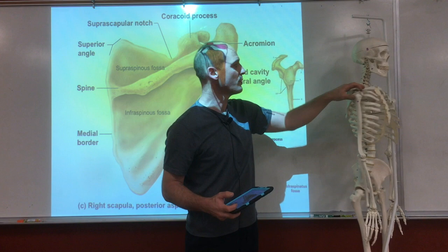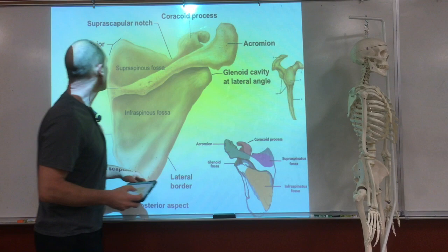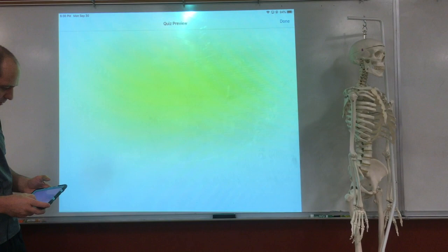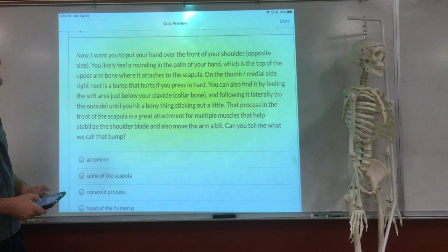And then in front here, right in here, there's also a name we need to learn. That name is called the coracoid process. Is that a quiz question? Yes. Let's go to it — that's the answer to the next question. Coracoid process.